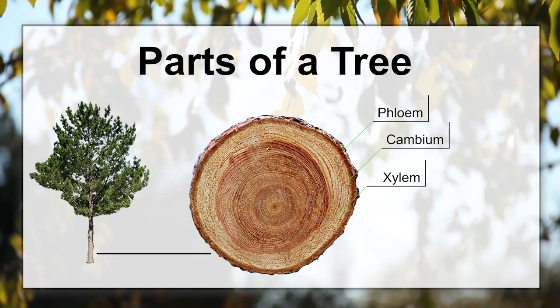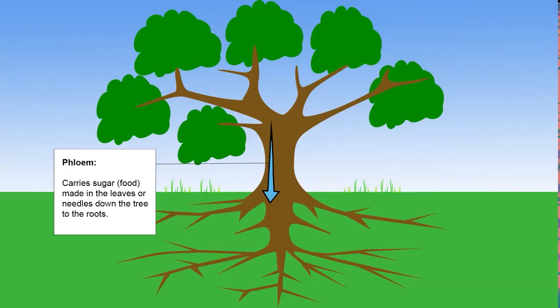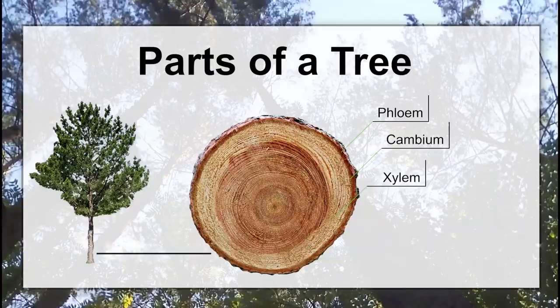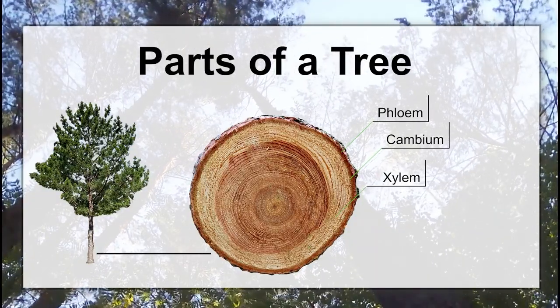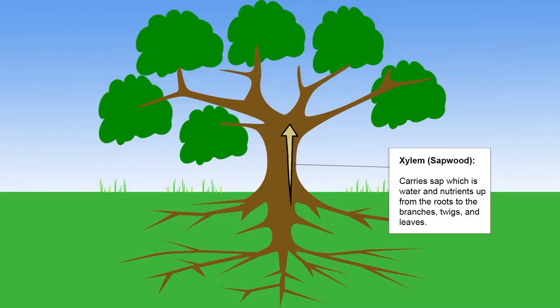Let's break that down a little bit. The phloem, or the inner bark, carries the sugar that's made in the leaves or needles down the branches, down the trunk, and into the roots where it's converted into food for the tree. The xylem, or sapwood, carries sap — which is water plus nitrogen and some minerals — up from the roots to the leaves, and it gives the tree strength.